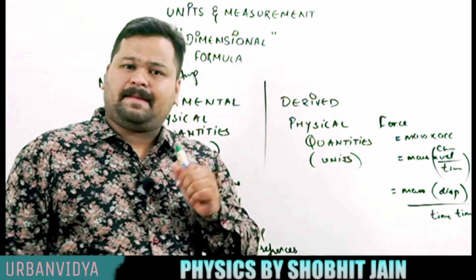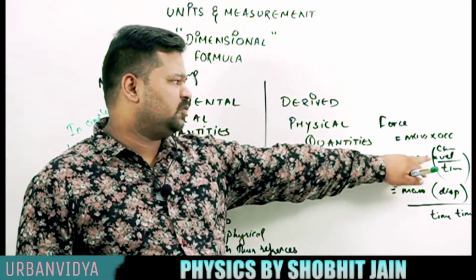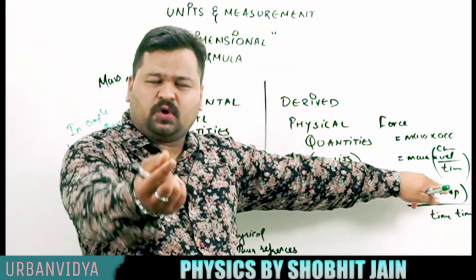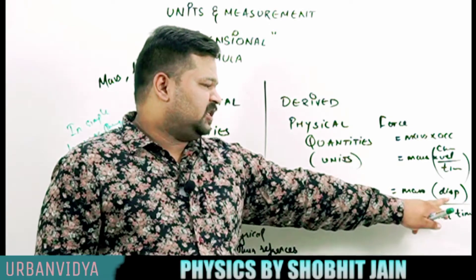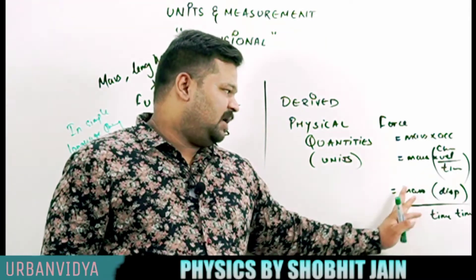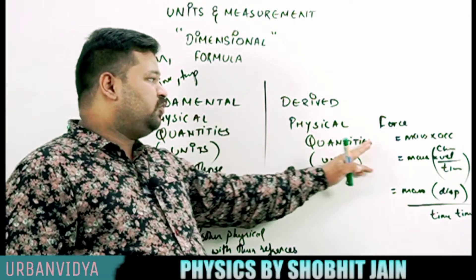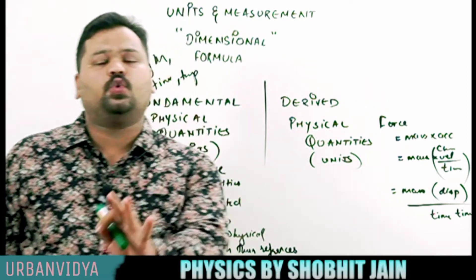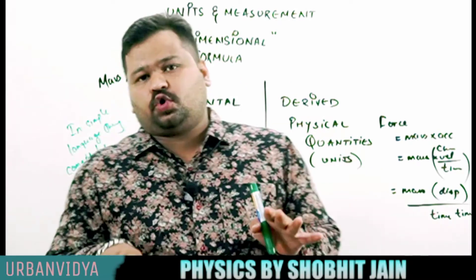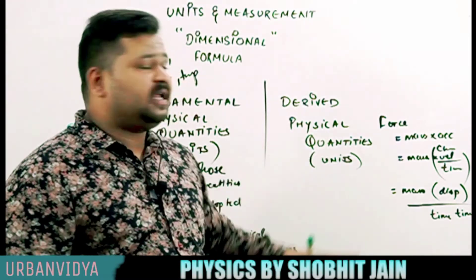So to recap: force = mass × acceleration = mass × (change in velocity / time) = mass × (displacement / time) / time = mass × displacement / time². So the physical quantity force depends on mass, displacement, and time squared - all fundamental quantities. Fundamental quantities are those from which other quantities are derived; derived quantities are those which come into existence with the help of fundamental quantities.